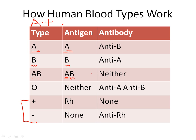Our immune system takes anything that it considers foreign and makes an antibody against it. An antibody is a special protein meant to stick to that antigen so the body can get it out.